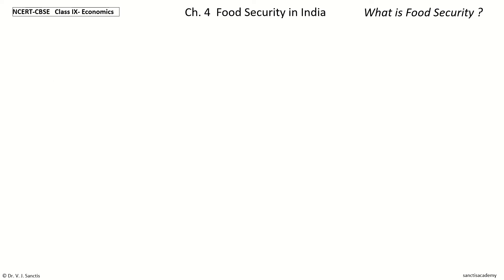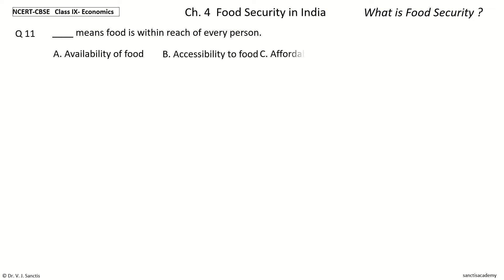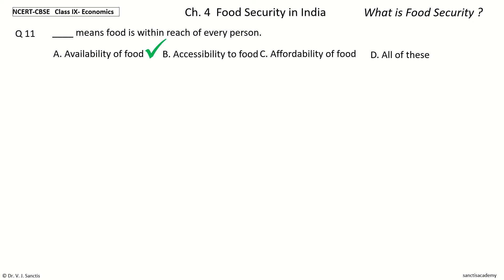Question 11: Dash means food is within reach of every person. The options are: availability of food, accessibility to food, affordability of food, all of these. Your time to choose. And the answer is accessibility to food. So accessibility to food means food is within reach of every person.